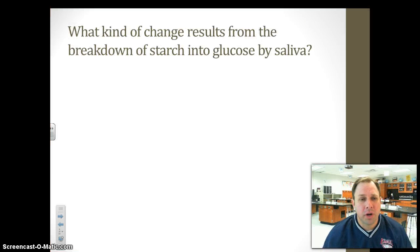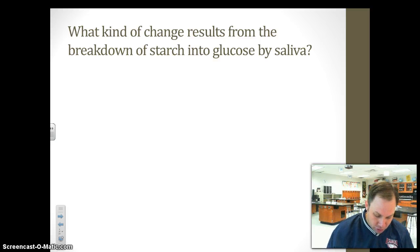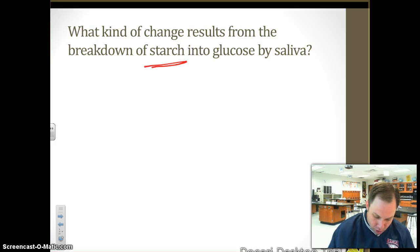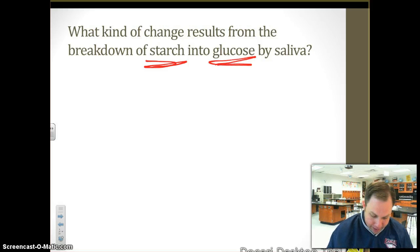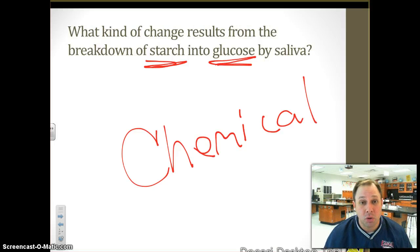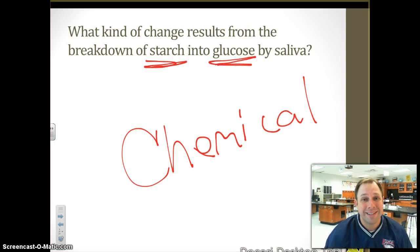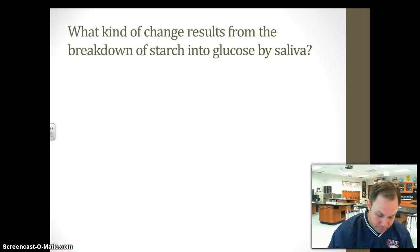What kind of change results from the breakdown of starch into glucose by your saliva? Starch into glucose — starch being that carbohydrate, like potatoes — turning potatoes into glucose, which is sugar. That is chemical. I'm turning it into something new. I'm taking bread and turning it into sugar. That's a chemical change — turning it into something new.